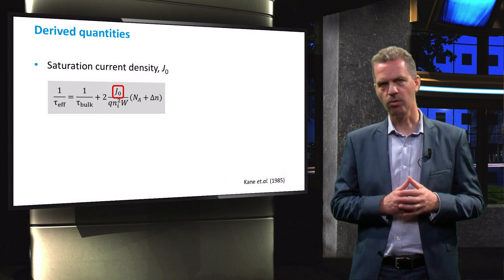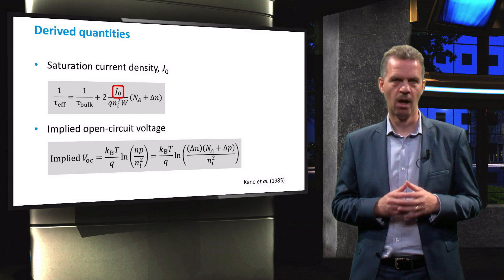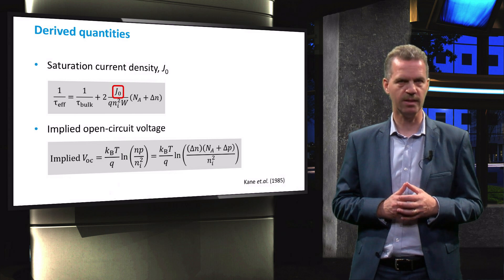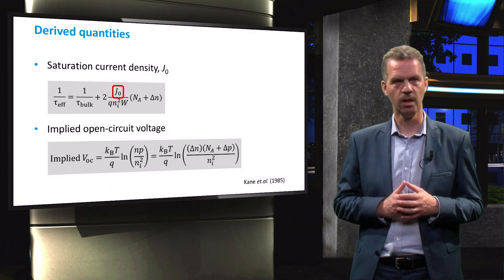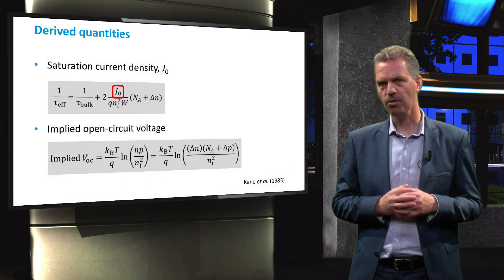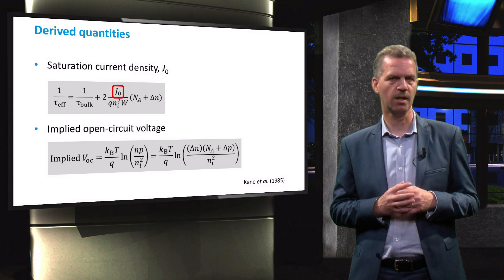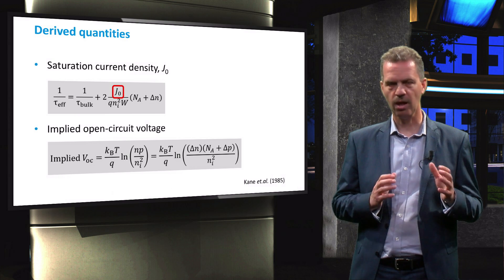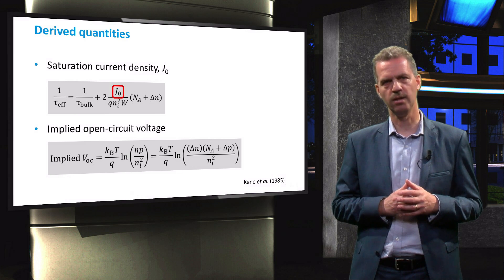The second quantity is the so-called implied VOC. This quantity can simply be calculated when knowing the carrier density at 1 sun illumination using this equation. Note that this implied VOC is not the same as the VOC of the solar cell, as this photoconductance measurement discussed here does not take voltage losses in the cell into account.